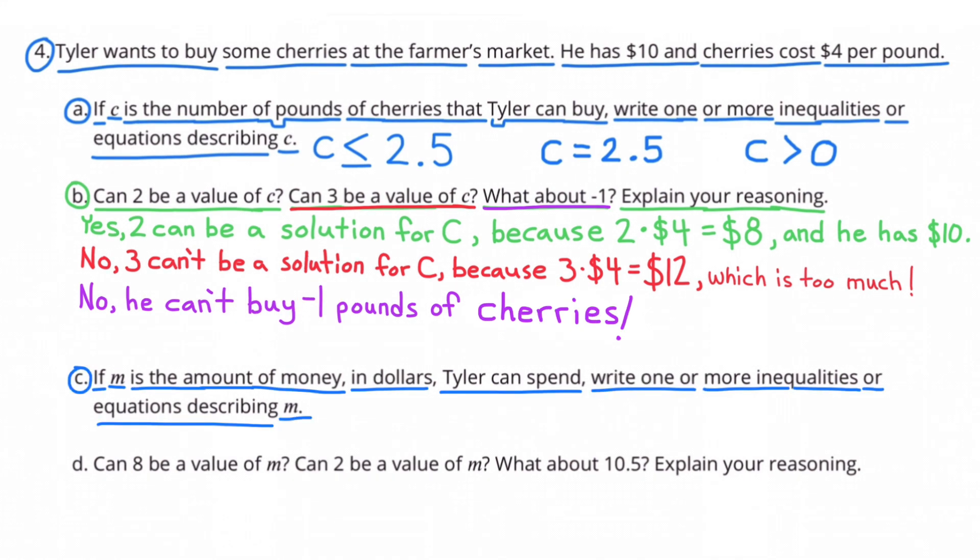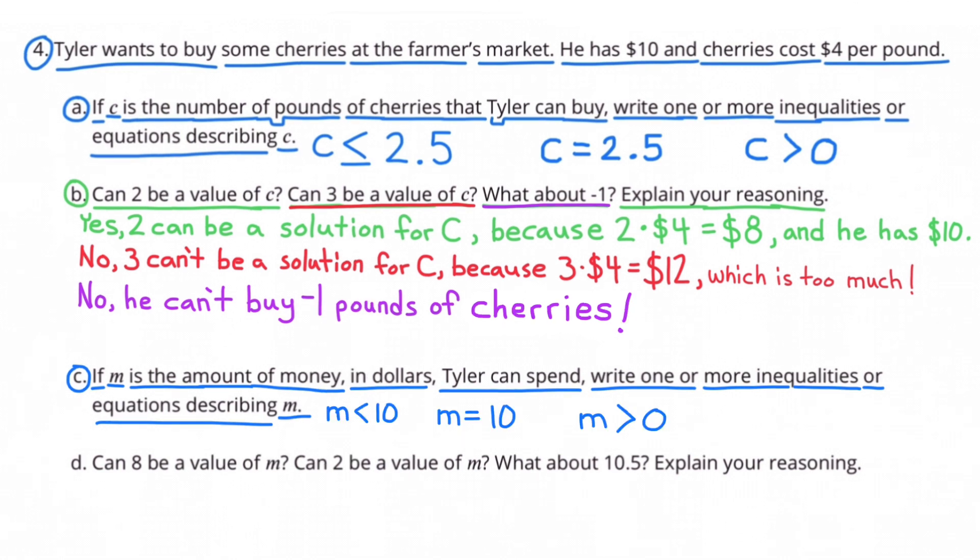C. If M is the amount of money in dollars Tyler can spend, write one or more inequalities or equations describing M. M is less than 10, M is equal to 10, and M is greater than 0.